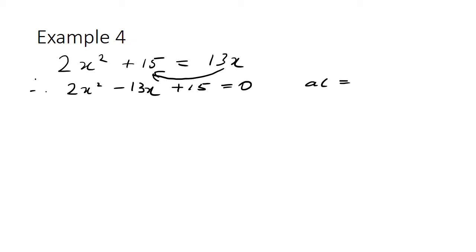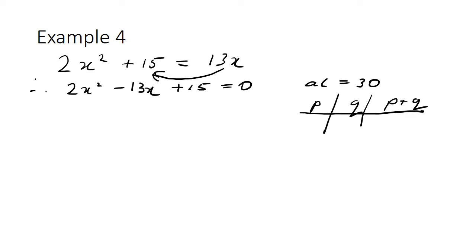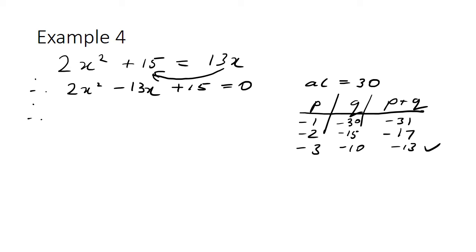So we look at ac which is equal to 30, and factors of 30 that add up to minus 13 — both going to be negative. Going through p and q: minus 1 and minus 30 gives minus 31; minus 2 and minus 15 gives minus 17; minus 3 and minus 10 gives minus 13. So that's the one we want. We split our x term using those two numbers, so that becomes 2x squared take 3x take 10x plus 15 equals 0.